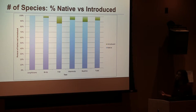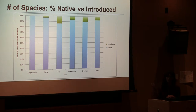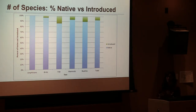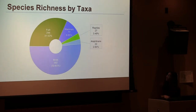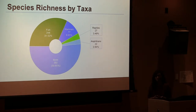Looking at the percentage of native versus introduced species, the majority are native across all taxa. Amphibians have the highest native percentage, while fish have the most introduced species at about 16% — though they are still fairly high in native percentage. Overall, 93% of species recorded were native.